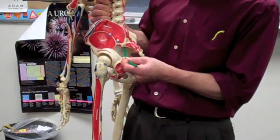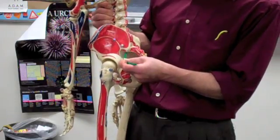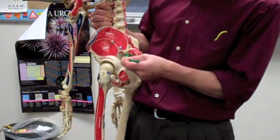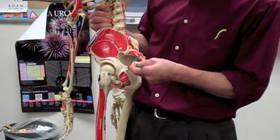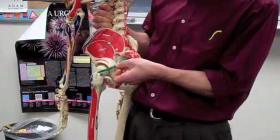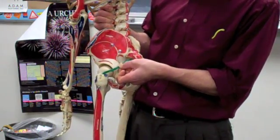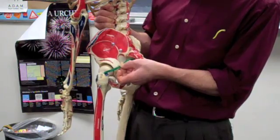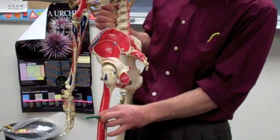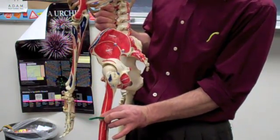The piriformis muscle originates at the lateral border of the sacrum on the anterior portion, and it inserts into the greater trochanter. When we contract that muscle, we can see nicely how that will laterally rotate the thigh.